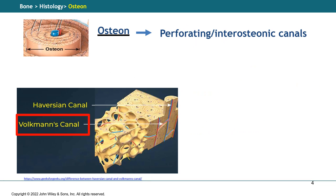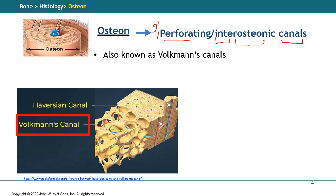The second component I'm going to talk about is a different type of canal called perforating canals, also known as inter-osteonic canals. The third name you can find in the literature is the Volkmann canal. Here in yellow I'll show you in the schematic the Haversian canals — you can see a big one here — and remember, they run parallel to the long axis. The Volkmann canal, on the other hand, runs perpendicular.